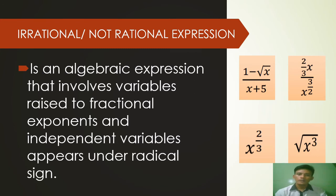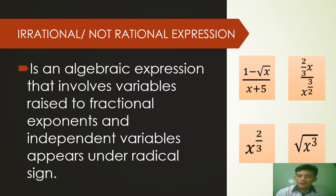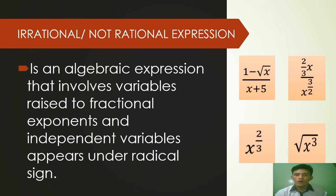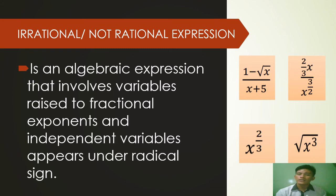In Example number 2: two-thirds X over X raised to 3 over 2. Why is it irrational? It is because the variable was raised to a fractional exponent, which is X raised to 3 over 2. In Example number 3: X raised to 2 over 3. It is still irrational because the algebraic expression was raised to a fractional exponent, which is 2 over 3.